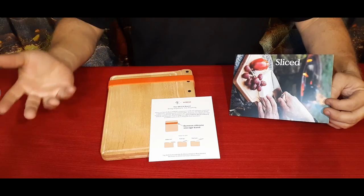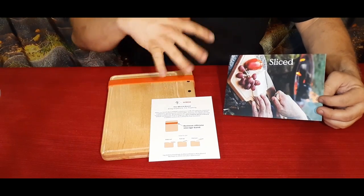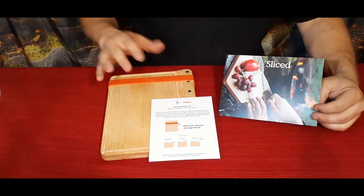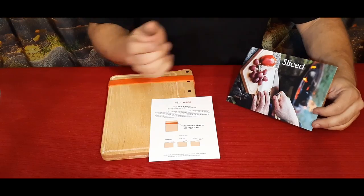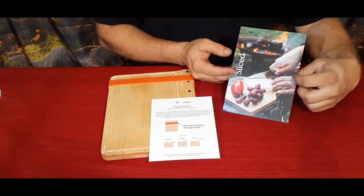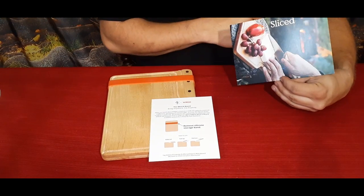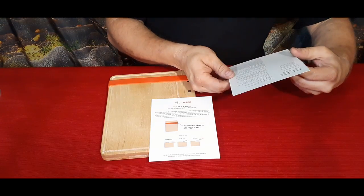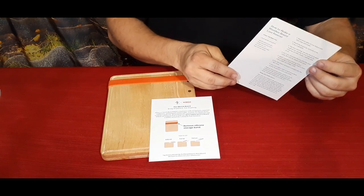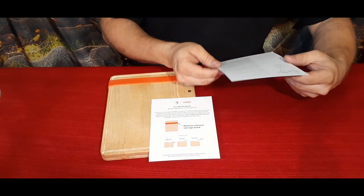Alright guys, so this is what we've got in the box: a couple pieces of paper basically and the product. Now they also have it labeled as the Slice Kit. I guess you could put it this way so you could read it, and then on the back it gives you some other information.